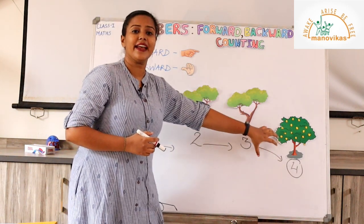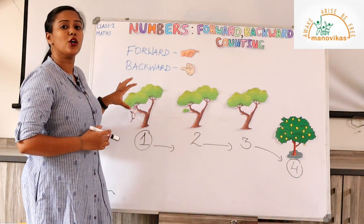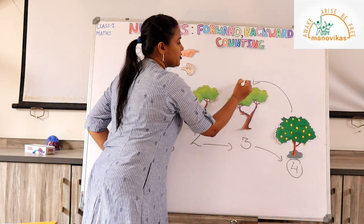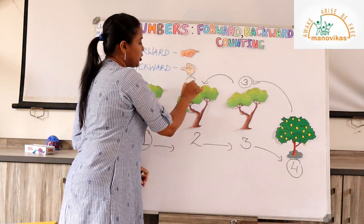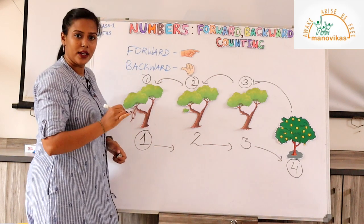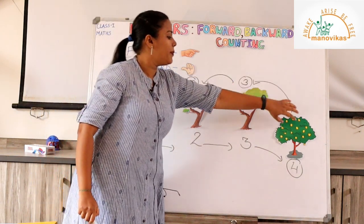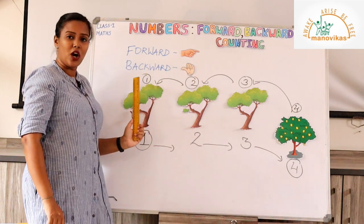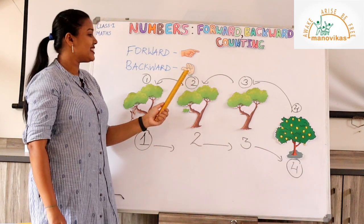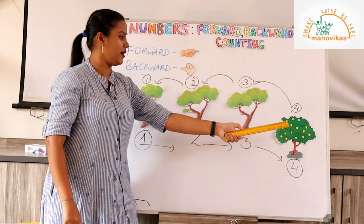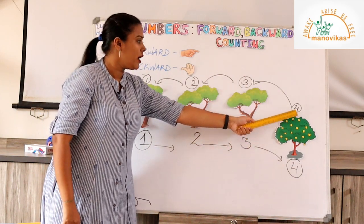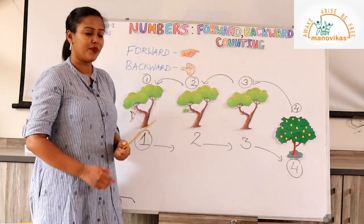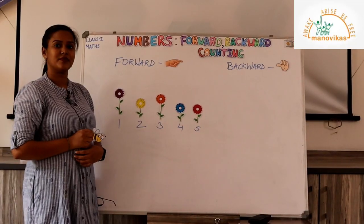After eating his fruits, the monkey came back to his own tree. He went from tree number 4 to tree number 3, then again to tree number 2, and finally to tree number 1. When we count from a bigger number to a smaller number, we call it backward counting. So the sequence 4, 3, 2, 1 is called backward counting.